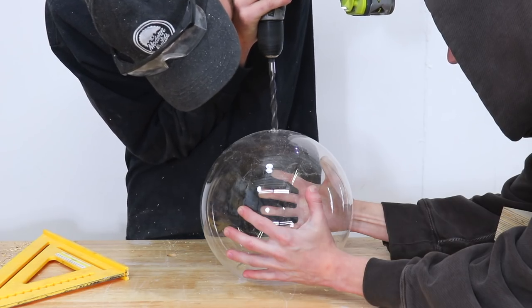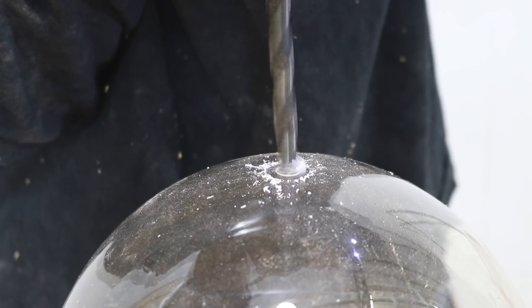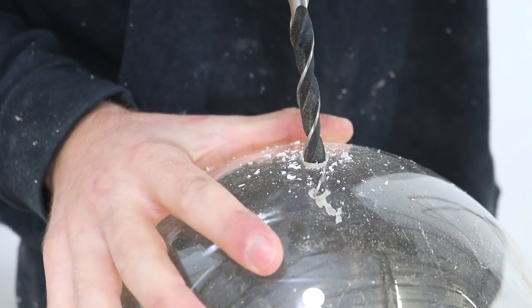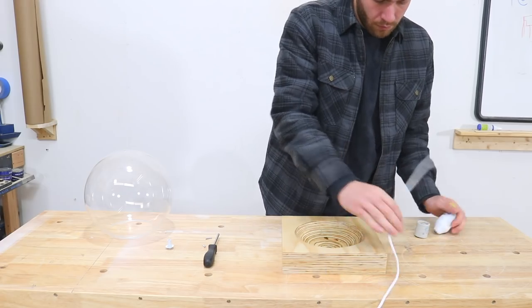I used a drill bit slightly bigger than the threaded rod that's gonna go through this hole right on the bottom of the globe. Make sure you drill this really slow with really light pressure so it can't crack.